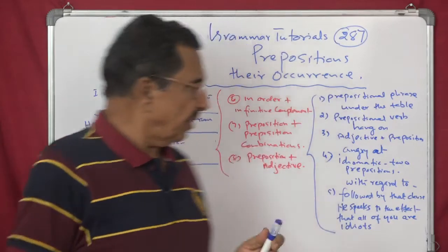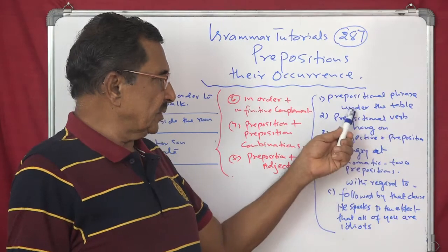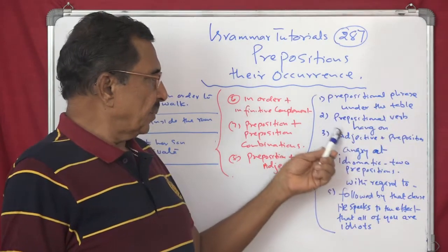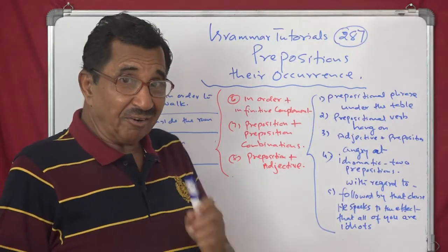We have seen so far prepositional phrase, for example, under the table. Prepositional noun phrase. Prepositional verb, hang on. Don't hang on here.